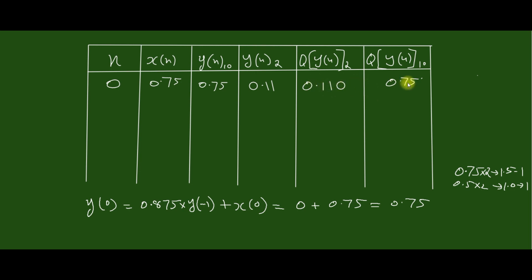Next, we can compute for n = 1. When n = 1, y(1) equals the value obtained, which is 0.65625. So for n = 1, x(n) = 0, then the corresponding output is 0.65625. Now we can convert it into binary form.